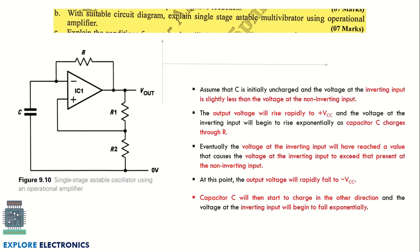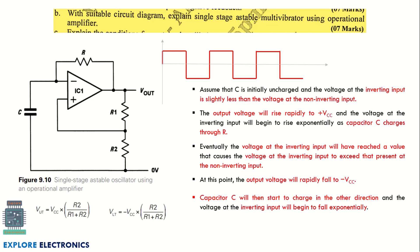The next question asks you to explain a single-stage astable multivibrator using an operational amplifier with a suitable circuit diagram. You need to draw the circuit for the astable multivibrator, provide a brief explanation of its working, draw the output waveform which is a square wave, and write the expressions for V-UT and V-LT.